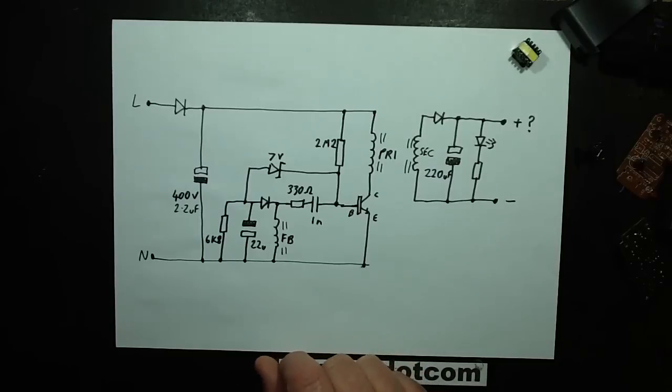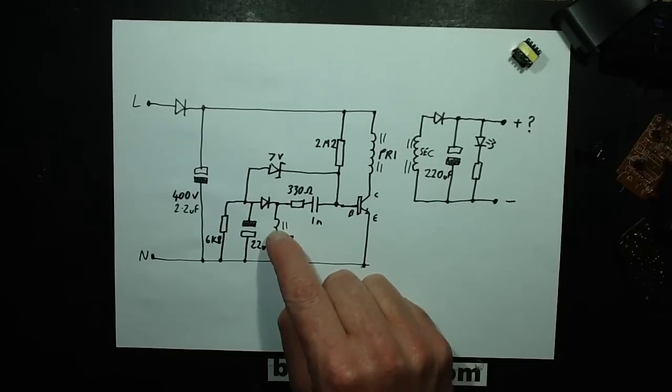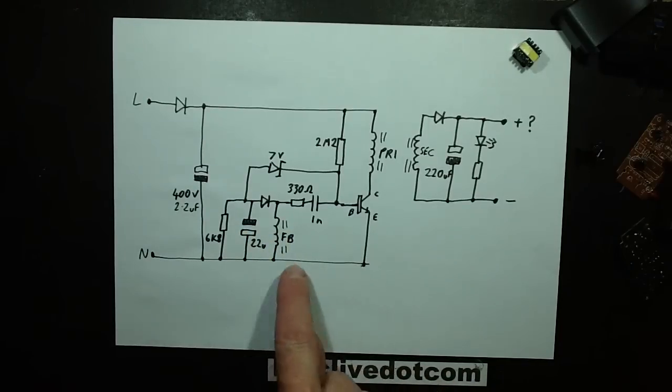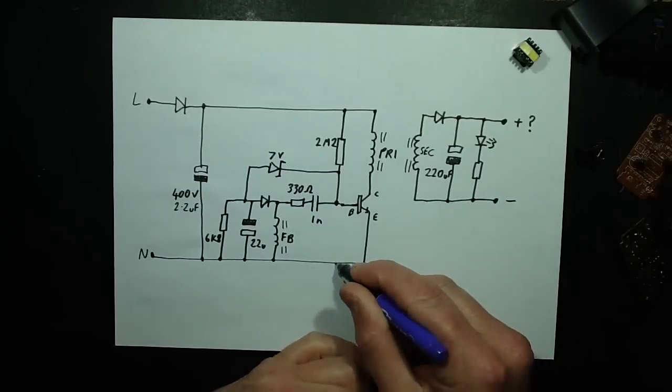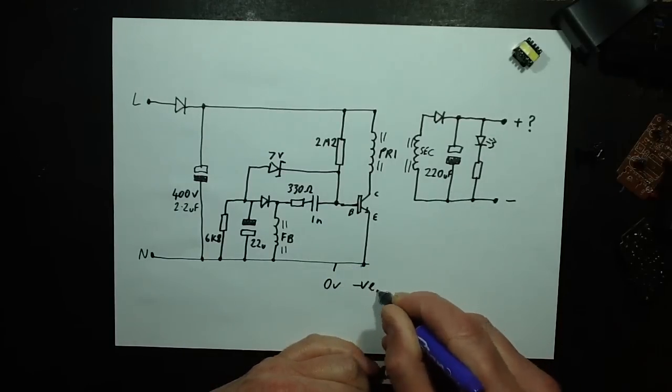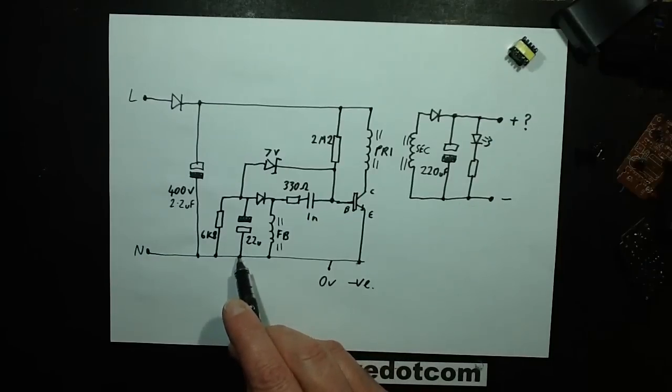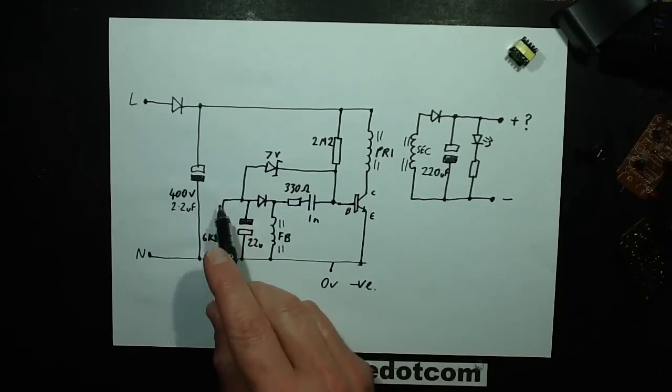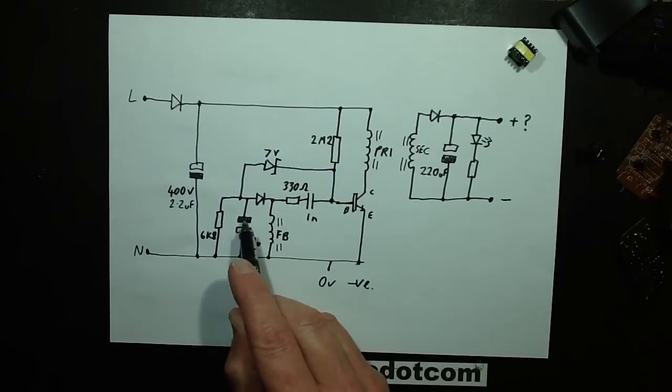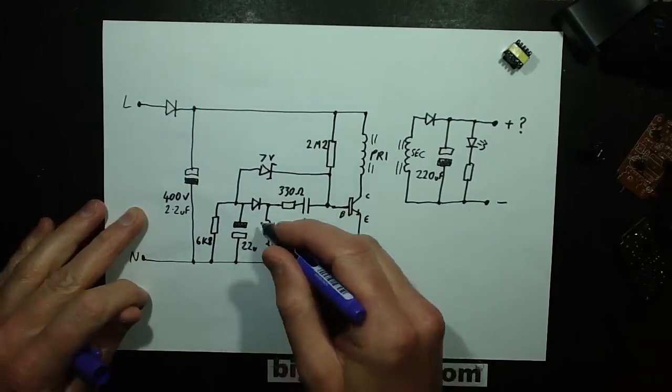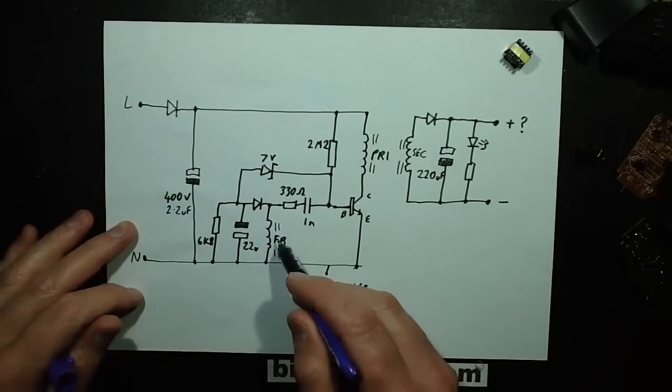But here's the weird bit again. The feedback winding, the negative pulse off it, charges this capacitor negative with respect to the sort of circuit ground. Let's say this is the circuits zero volt or negative whatever you want to call it. It charges it negative with respect to that and there's a sort of timing factor as well. There's a resistor across that to trickle discharge that capacitor.